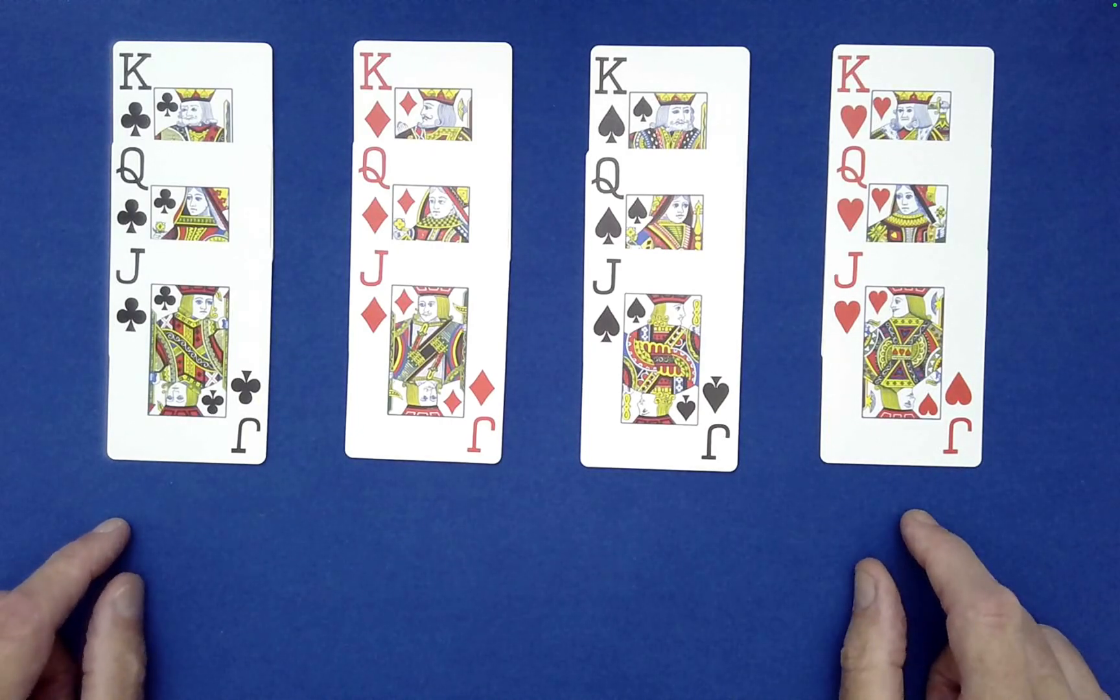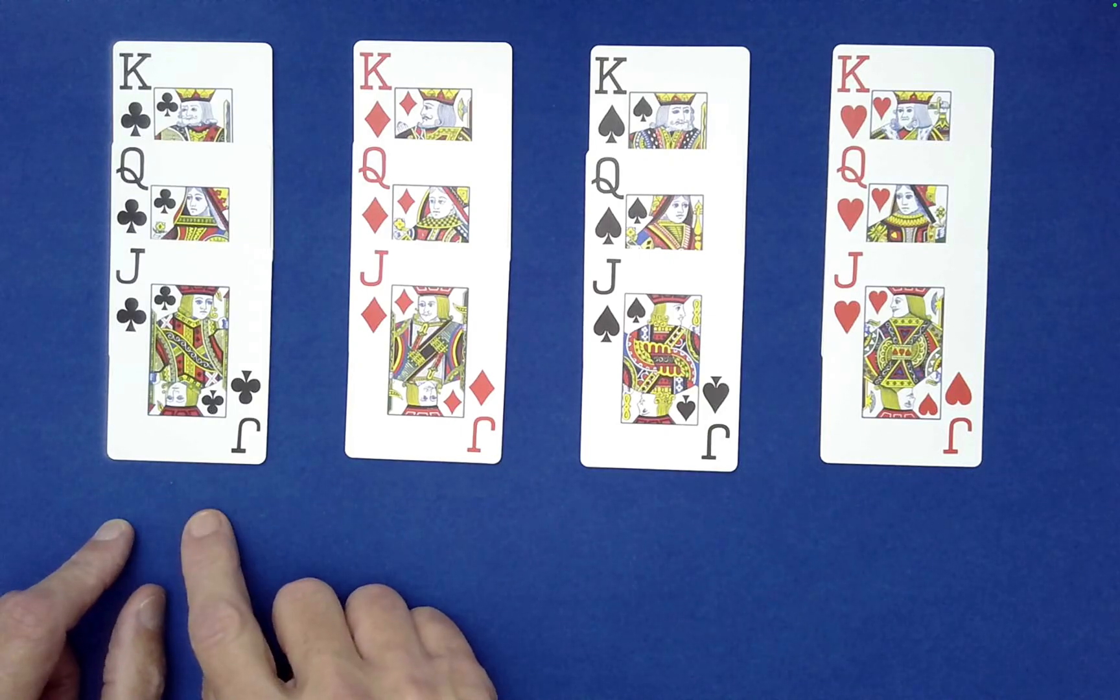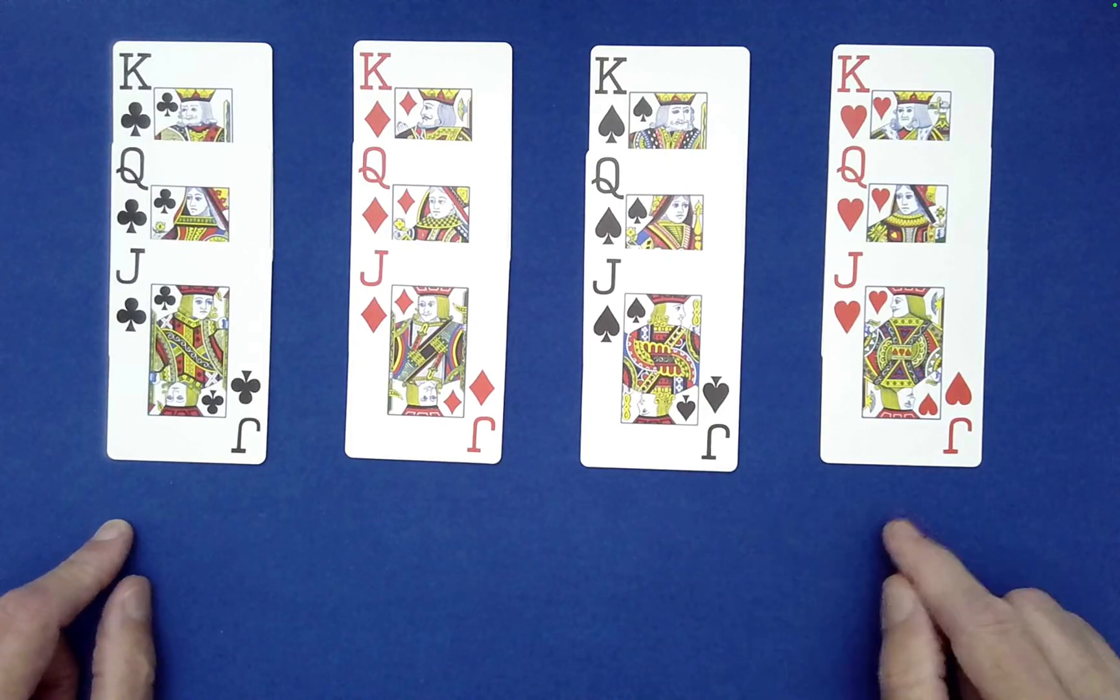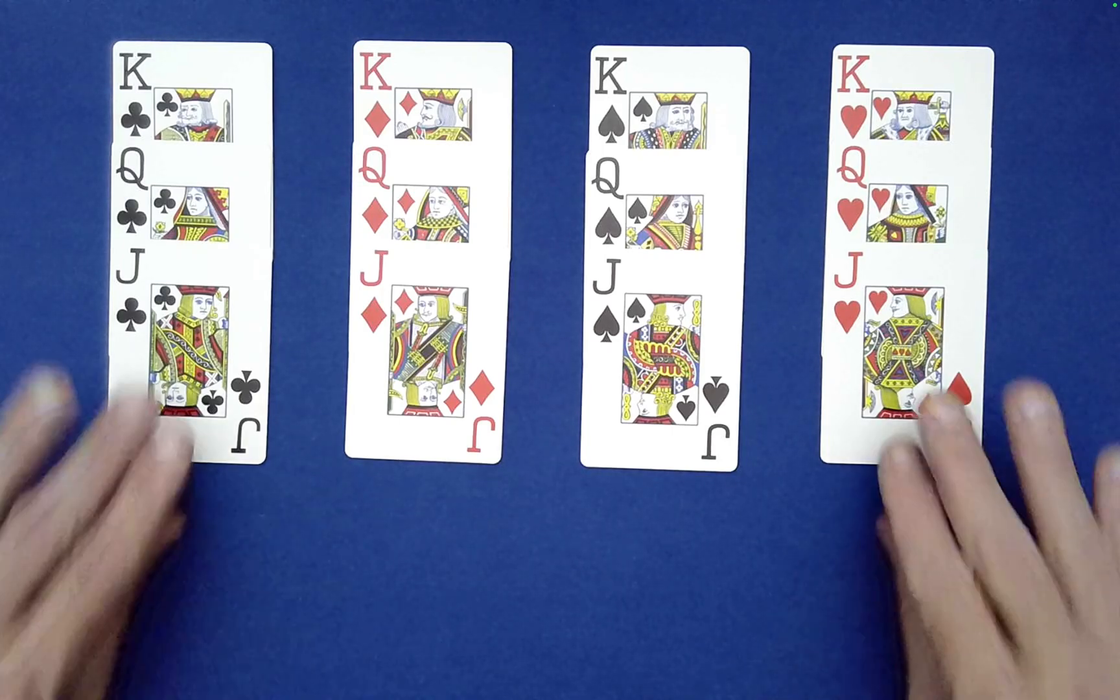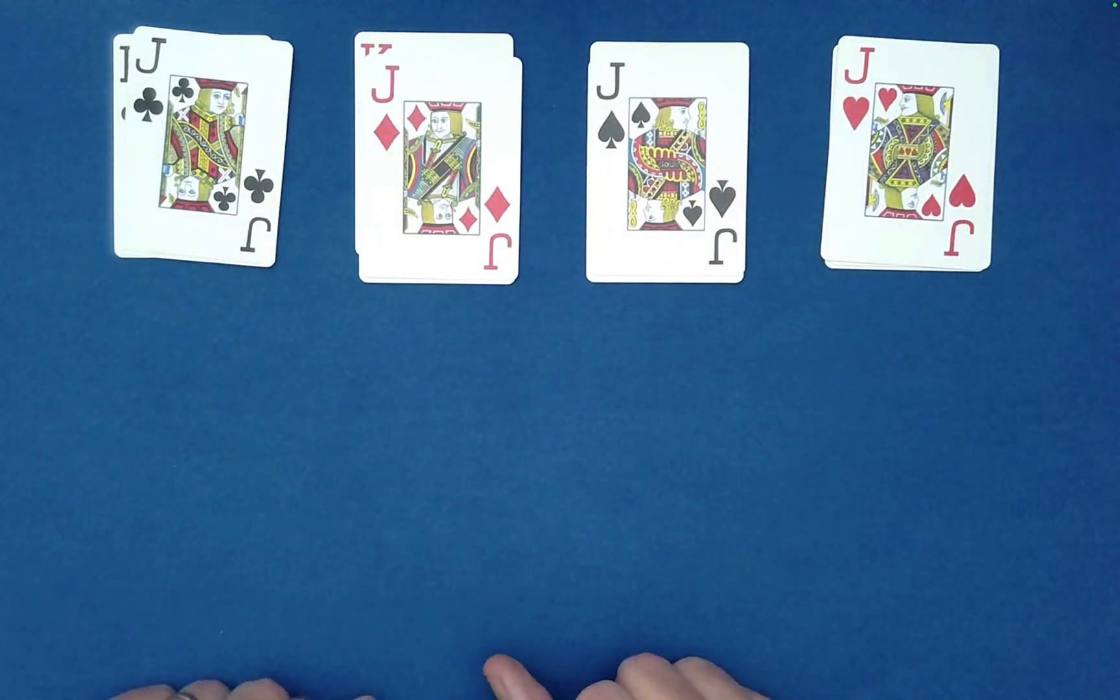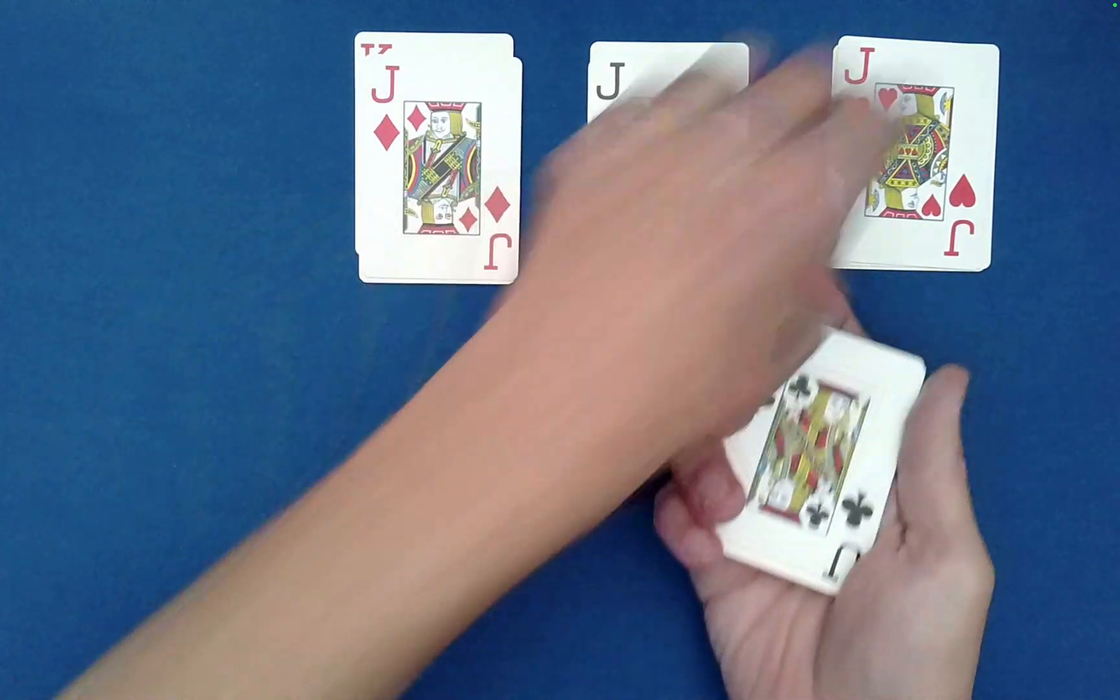So we have here the four royal families: clubs, diamonds, spades, and hearts. Now I need you to tell me how to gather these families. Of three, that one, and then hearts, diamonds, and then spades.